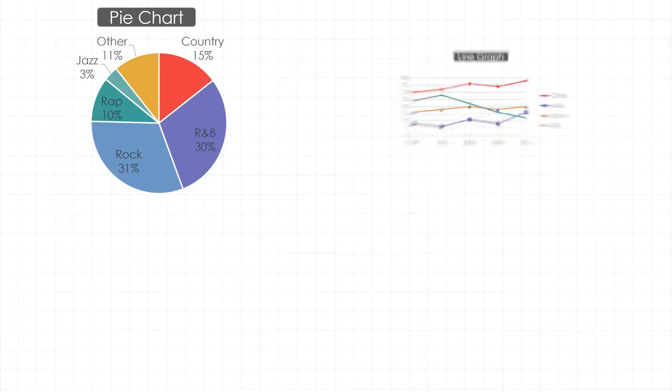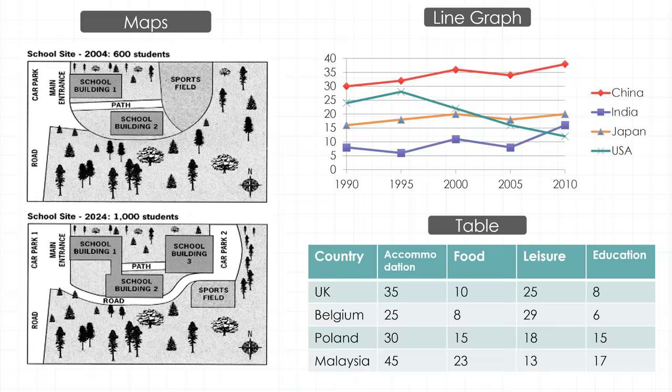Pie charts, line graphs, bar charts, tables, maps, and diagrams. In your IELTS academic writing task 1, you'll be required to describe one of them.